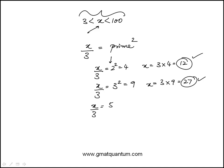The next prime would be 5. 5² is 25, so x is 25 times 3, or 75, which also falls between 3 and 100. So I have 3 so far.